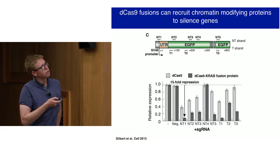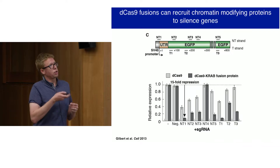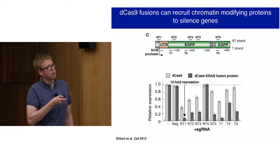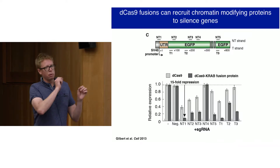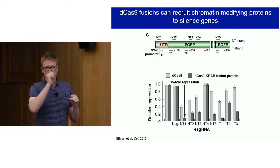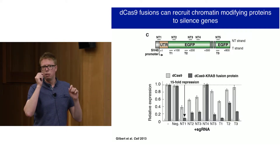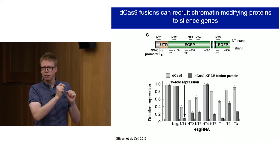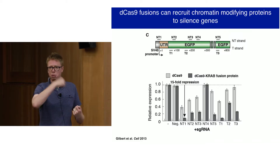This slide shows repression of the GFP reporter. If you target it with dCas9 alone, you see at most about two-fold repression. When you add the CRaB domain, you start to see more robust repression. We've improved on this over time, but this was our first hint that we're functionally targeting these domains to a gene to control transcription through local changes to the epigenome — not directly editing the epigenome with an enzyme, but using a scaffold to recruit endogenous enzymes that edit the epigenome to turn off transcription locally.